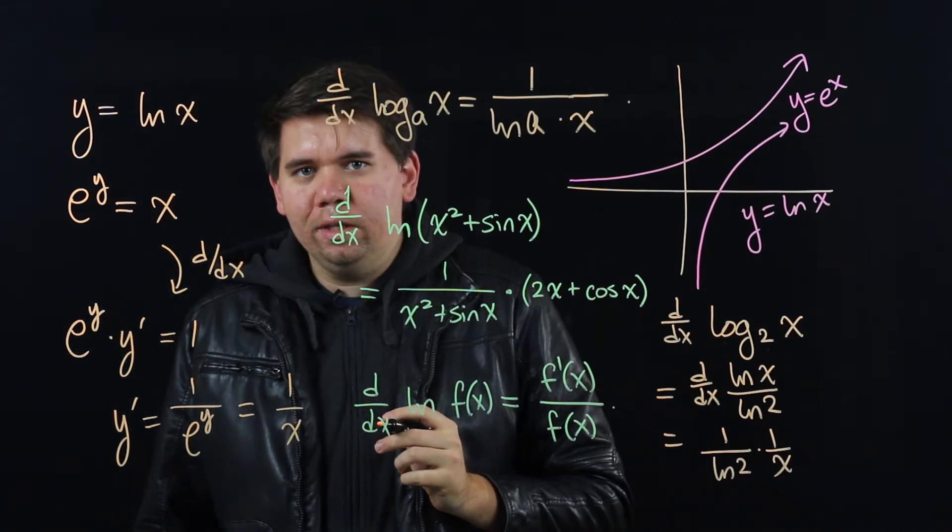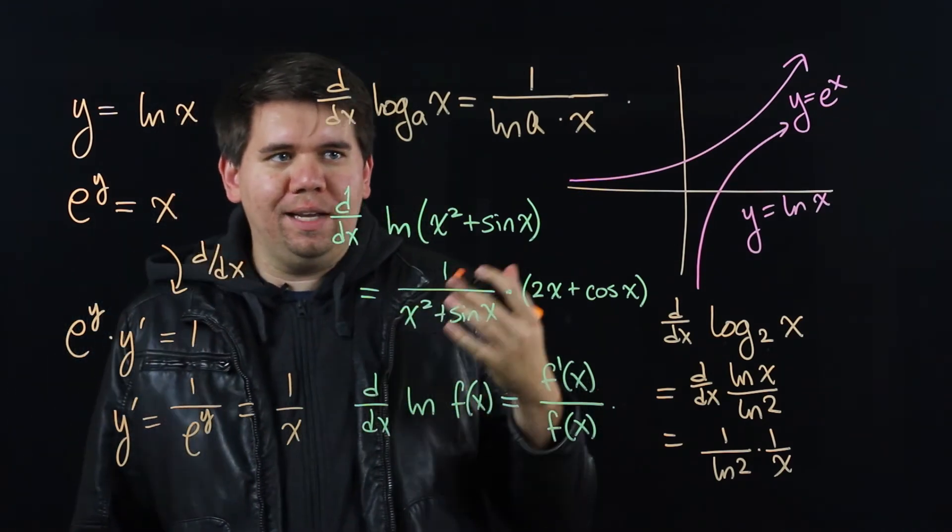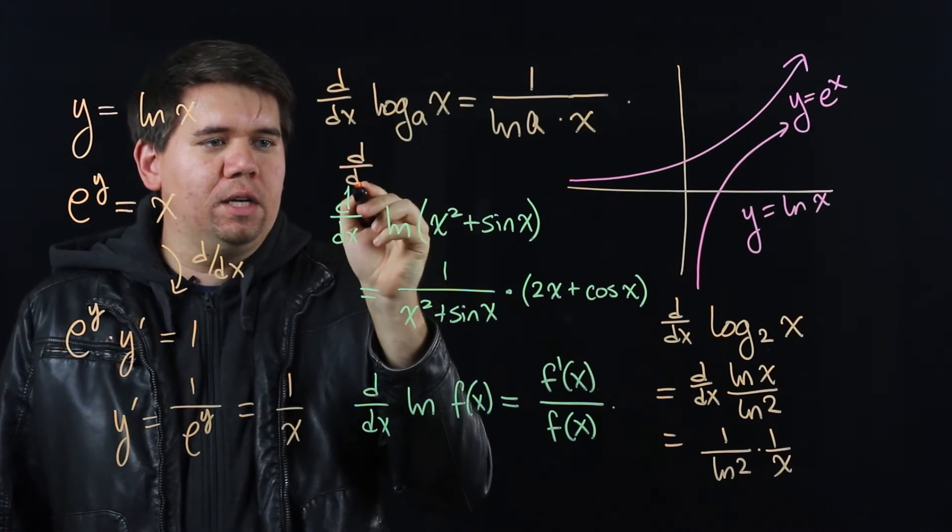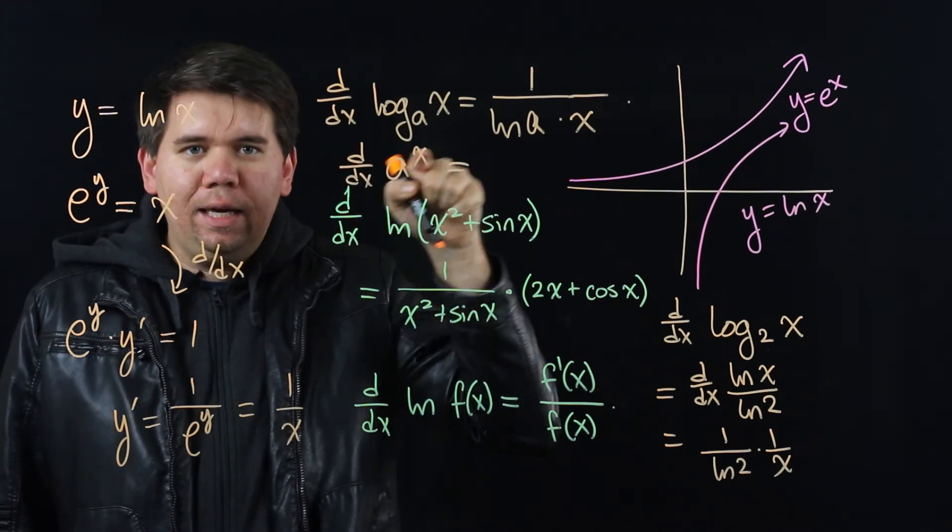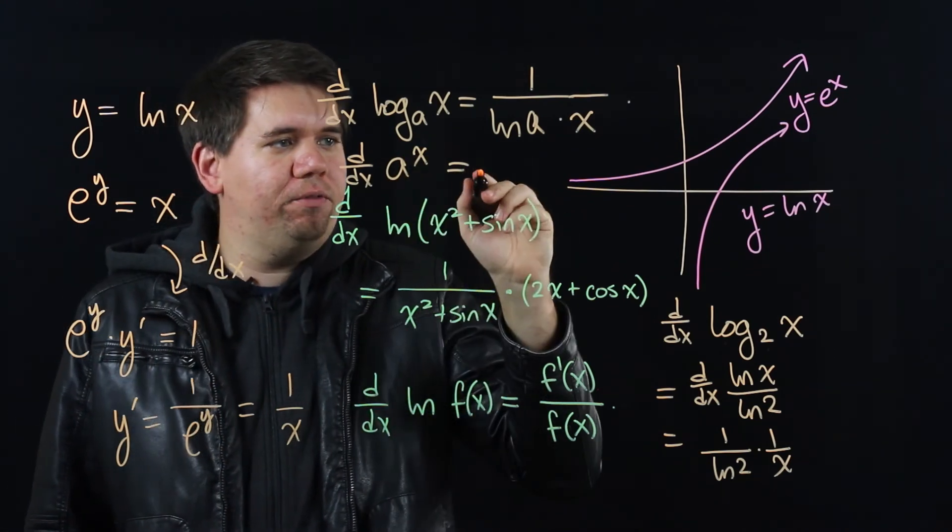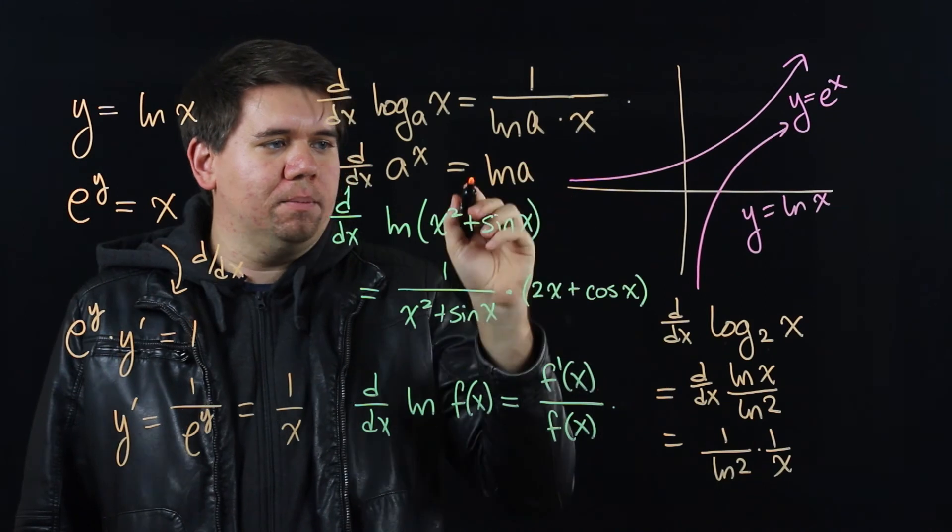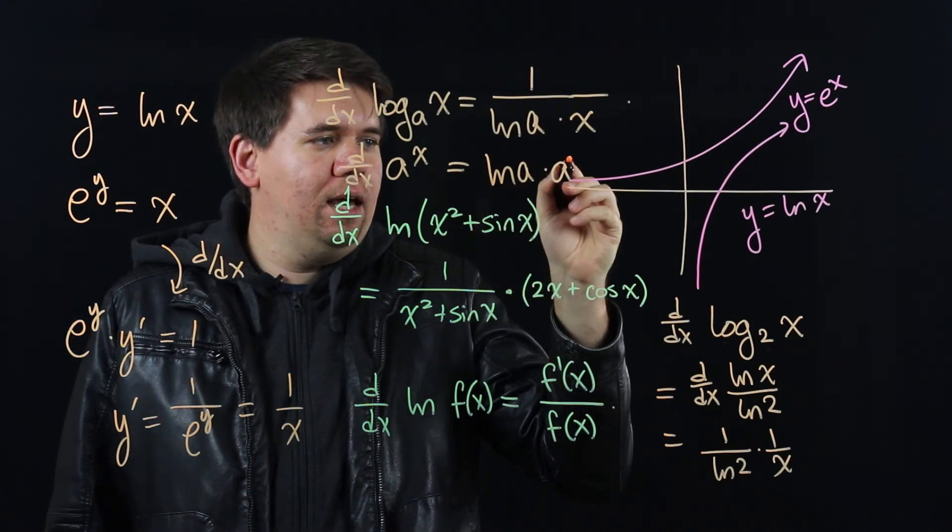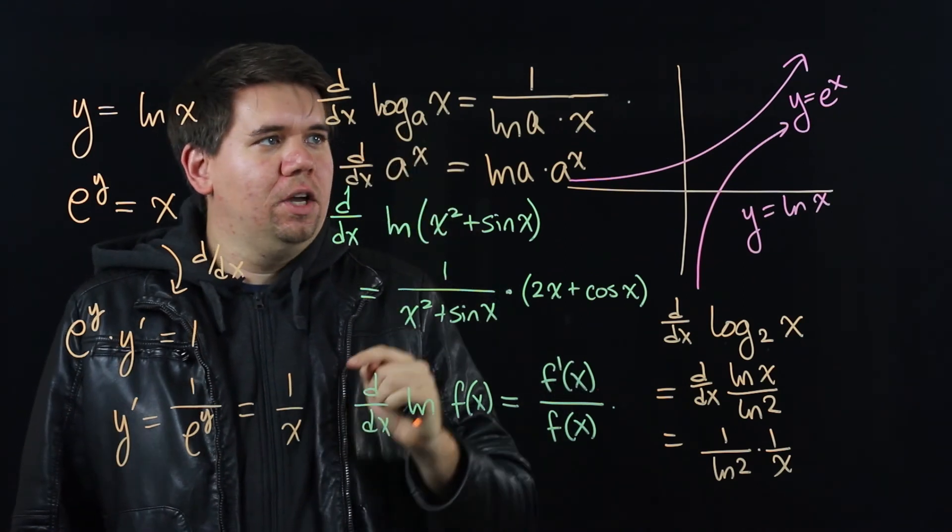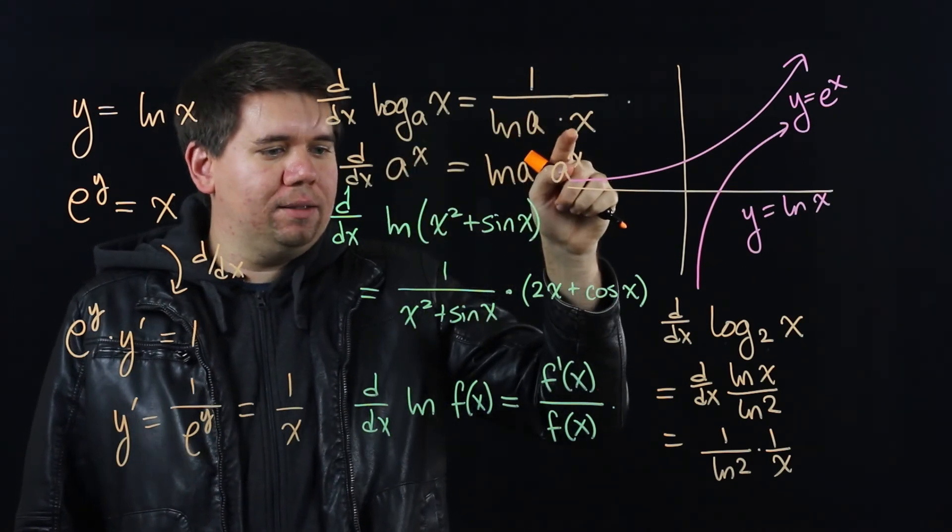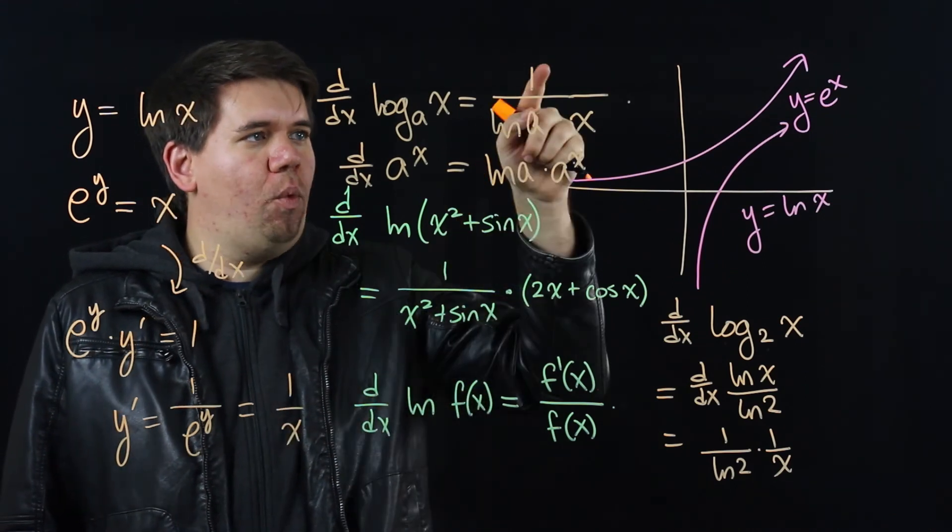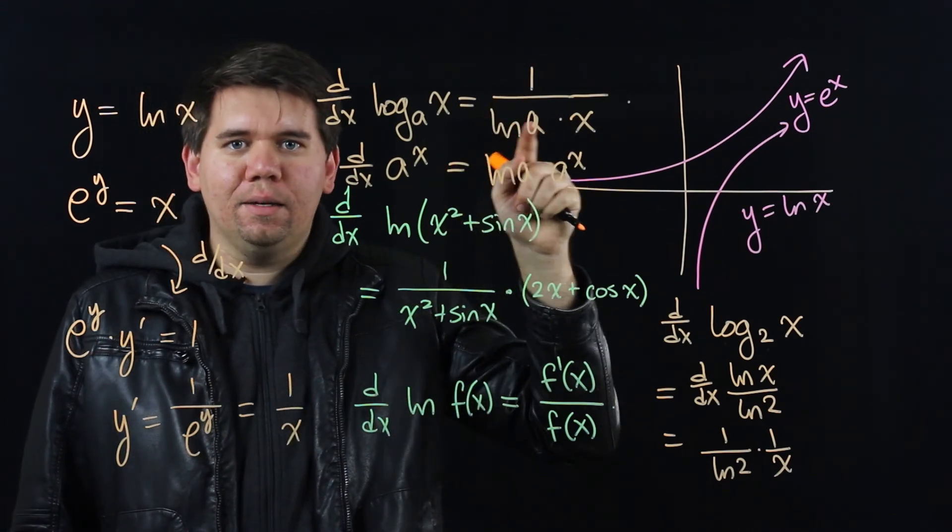This is quite similar to how our exponents worked out in general. So just compare this with what the derivative was for a to the x. For e to the x, it's just e to the x. But when you have a to the x, remember you picked up in front an ln of a term, ln of a times a to the x. In a similar way, when you have log base a of x, instead of just being 1 over x, like it is for ln, instead you have 1 over ln of a times x.